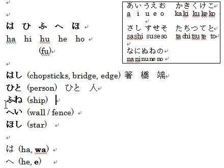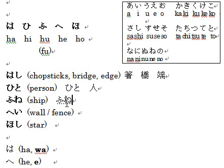Next word is ふね, which you type as F-U-N-E. You can also type H-U-N-E, but normally we type F-U-N-E. The kanji for ship is this one.